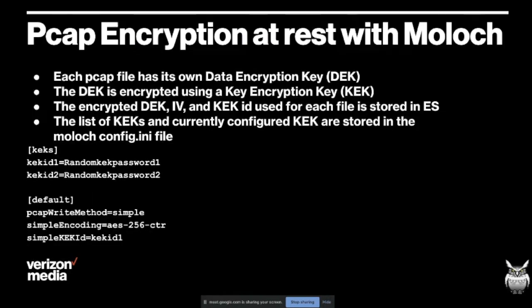How does Moloch encryption work? There's a data encryption key for every single file that's unique - every file written to disk has a unique data encryption key. That, with other stuff, is stored encrypted in Elasticsearch, encrypted using a key encryption key. That key encryption key is stored in the Moloch configuration file. If someone gets access to your box, even though they can't directly read the files, if they're smart enough they could go to Elasticsearch and get all the pieces to actually decrypt the data. But it's not foolproof - nothing is.